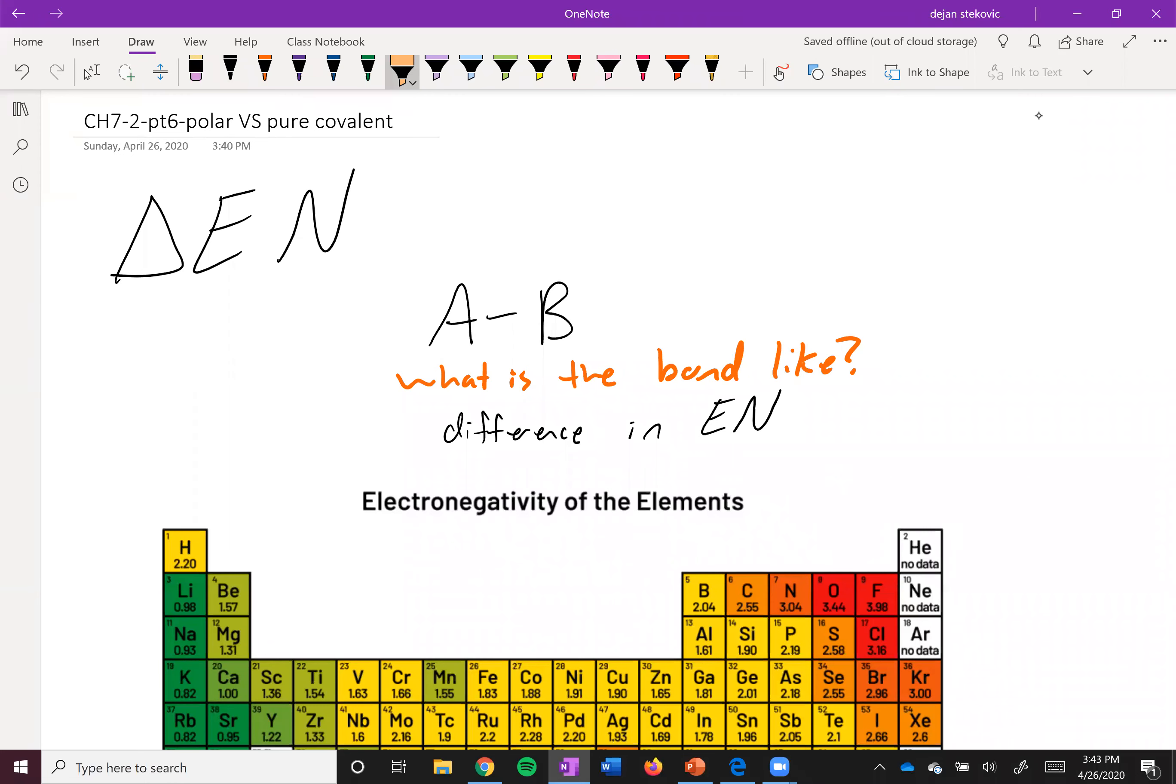All right, so if you had a molecule that was like A bonded to B, and you wanted to know what the bond is like, one of the main things you'd want to look at is the difference in electronegativity. That's going to tell you a lot about the properties of this bond.